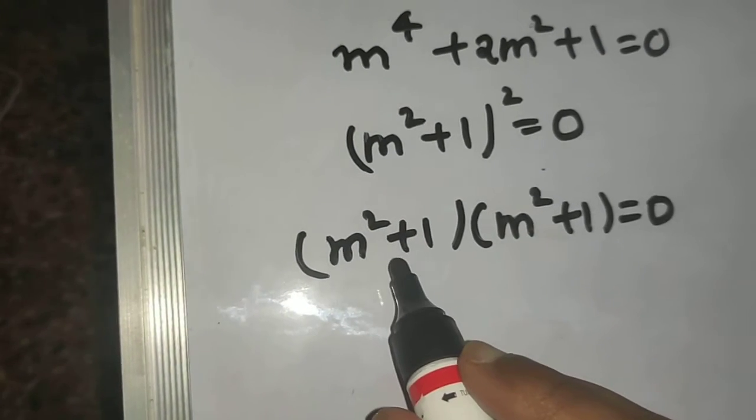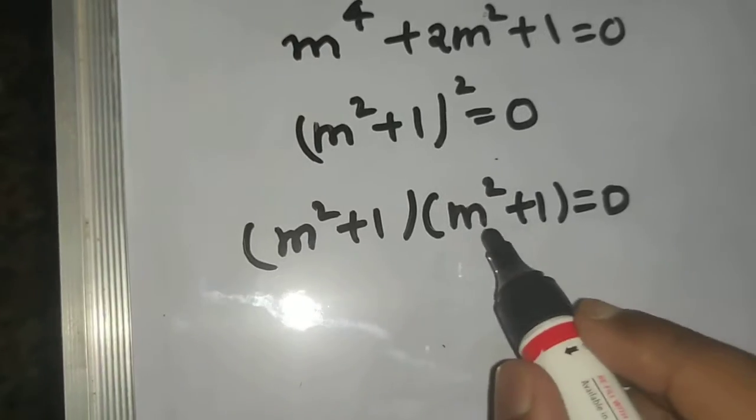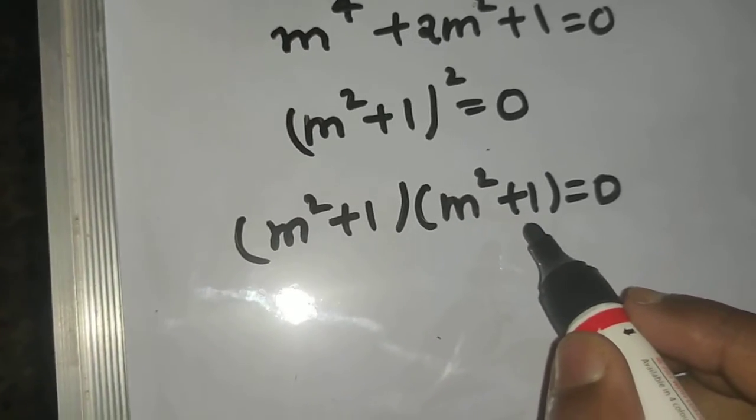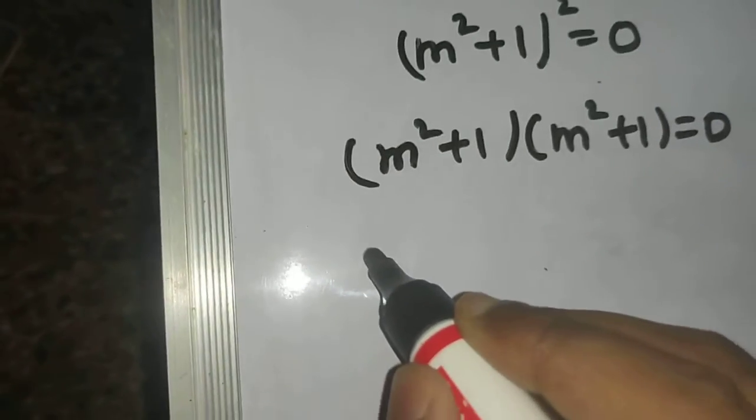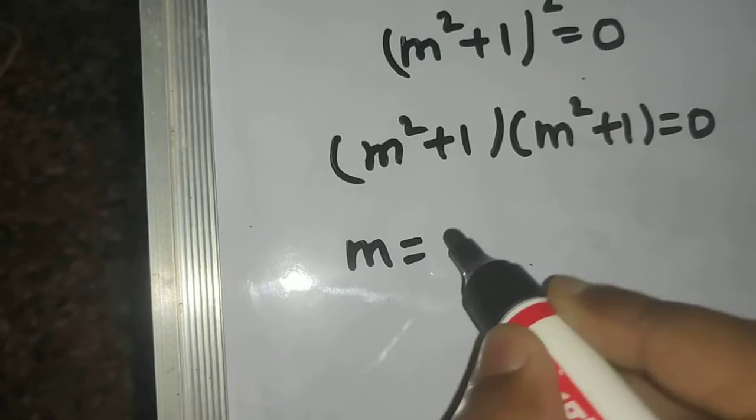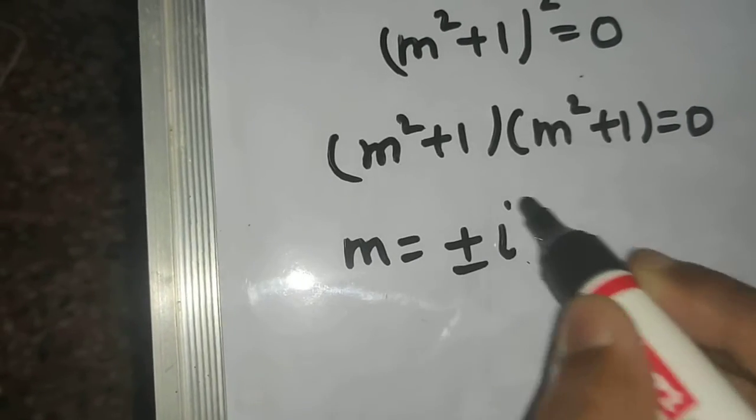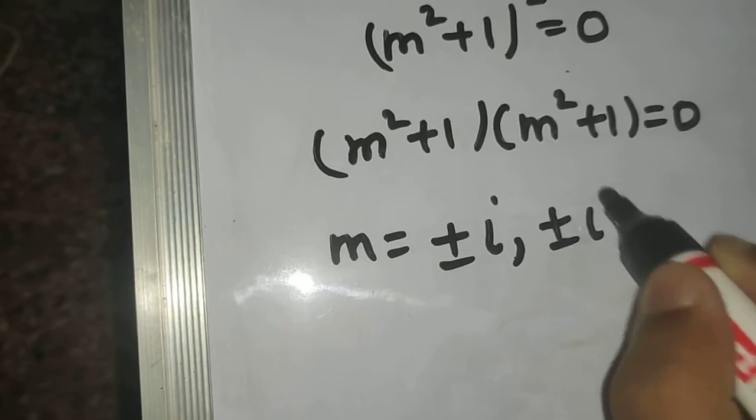Now from here you will get plus minus iota as the root. From here also you will get plus minus iota as your root. So your roots are repeating as plus minus iota.